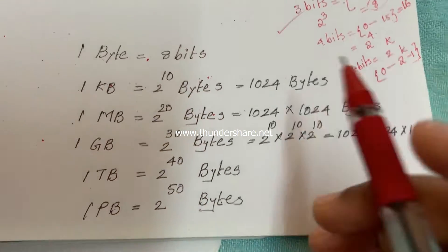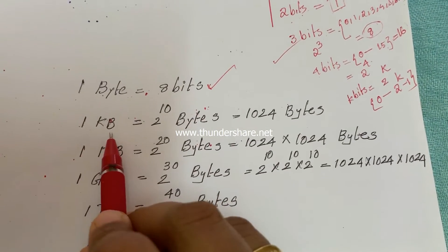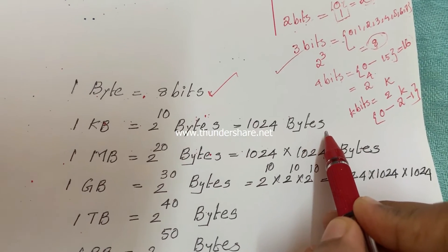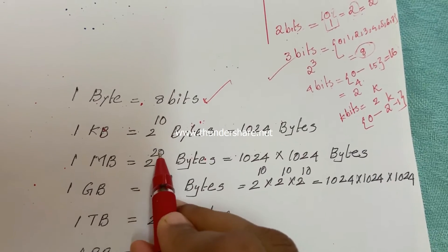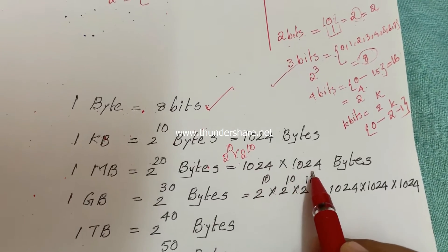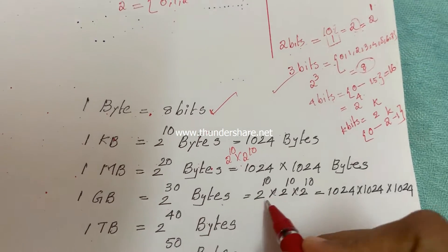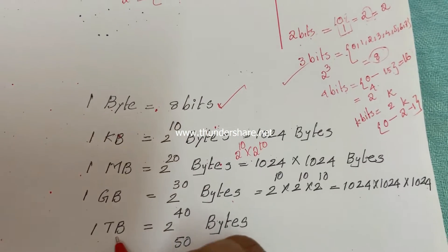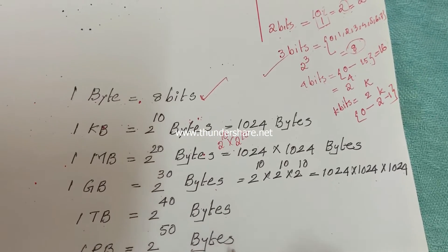Remember these general memory unit conversions: 1 byte equals 8 bits. 1 kilobyte equals 2 raised to 10 bytes, which is 1024 bytes. 1 megabyte equals 2 raised to 20 bytes, which equals 1024 times 1024 bytes. 1 gigabyte equals 2 raised to 30 bytes. 1 terabyte equals 2 raised to 40 bytes. 1 petabyte equals 2 raised to 50 bytes.